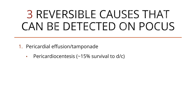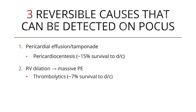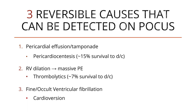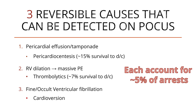Starting with pericardial effusion and cardiac tamponade — if you perform a pericardiocentesis, these patients have about a 15% survival to hospital discharge. Number two is RV dilation suggesting massive pulmonary embolus; if you administer thrombolytics, these patients have about a 7% survival to hospital discharge. And number three, fine or occult ventricular fibrillation — these patients require cardioversion. Each of these accounts for about 5% of cardiac arrests.